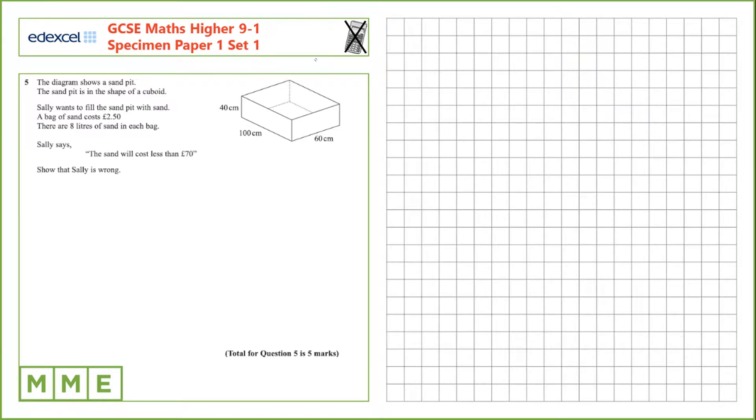Question 5. The diagram shows a sand pit in the shape of a cuboid. Sally wants to fill the sand pit with sand, and a bag of sand costs £2.50. There are 8 litres of sand in each bag. Sally says that the sand will cost less than £70. We need to show that she's wrong.